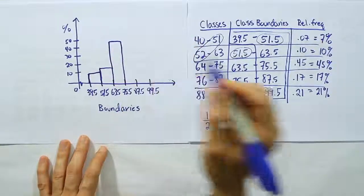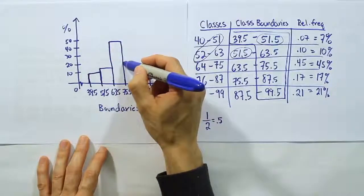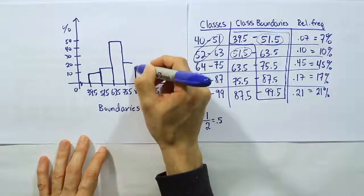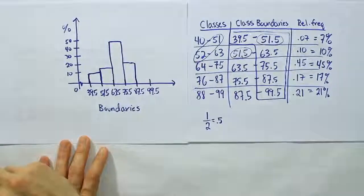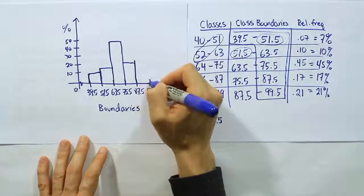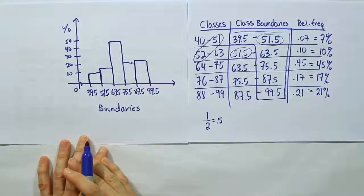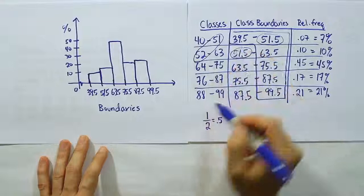And then from there, you're going to do the next one, which is about 17%. That's a little less than 20. And then just one more rectangle. It's 21% tall, so it's a little bit taller than 20. And that's basically what the histogram would look like given these particular categories.